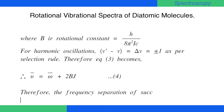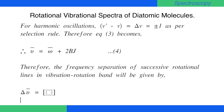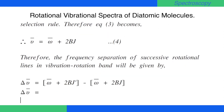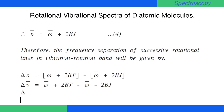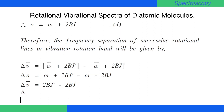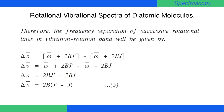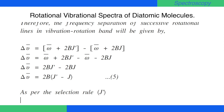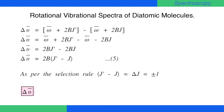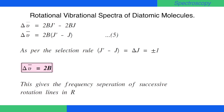The frequency separation of successive rotational lines in the vibrational rotational band is given by Δν̄ = (ω̄ + 2Bj') − (ω̄ + 2Bj). Expanding the bracket: Δν̄ = ω̄ + 2Bj' − ω̄ − 2Bj. The ω̄ terms cancel, so Δν̄ = 2Bj' − 2Bj = 2B(j' − j). This is equation number 5. As per the selection rule, Δj = j' − j = ±1, therefore the final equation becomes Δν̄ = 2B. This gives the frequency separation of successive rotational lines in the rotational vibrational spectrum.